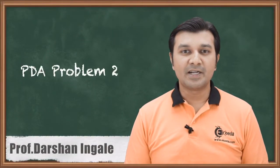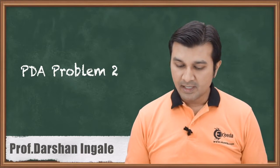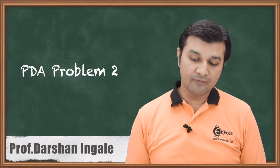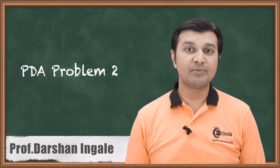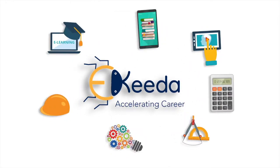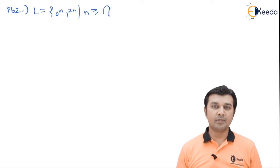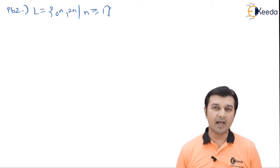Hello friends, let's get started with the second problem of pushdown automata. The question says L equals 0 raised to n, 1 raised to 2n, where n's value is greater than or equal to 1.